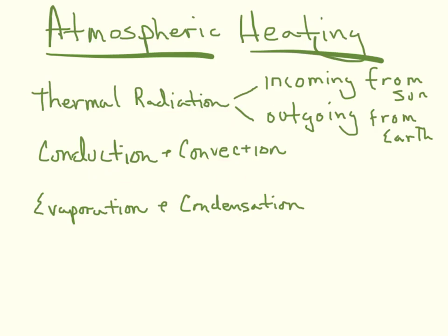For thermal radiation, basically what you have are two different things happening. You've got incoming radiation from the Sun — solar radiation — and we call that insolation. What we have coming in from the Sun is solar radiation, and what we have outgoing from the Earth is terrestrial radiation. The Sun emits and the Earth emits, and they're emitting different things: the Sun is doing primarily light, the Earth is doing primarily infrared.